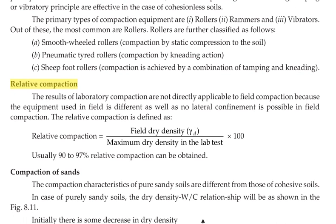Next, relative compaction: the results of laboratory compaction are not directly applicable to field compaction because the equipment used in the field is different and no lateral confinement is possible. Relative compaction is defined as: Relative Compaction = (Field Dry Density γd) / (Maximum Dry Density from lab test) × 100. Usually 90 to 97% of relative compaction can be achieved in the field.